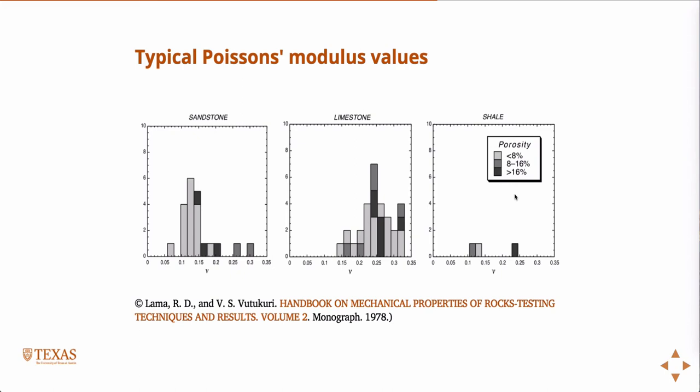Unconfined compressive strength tests are ubiquitously the most common experiments done on geomaterials. A lot of times this is the only test that will be done, and therefore it will be given to you as if — here's the UCS, here's the unconfined compressive strength — as if you should know everything about the rock based on that. But it turns out that rocks, in the situations that we use them under confinement, behave quite a bit differently than they do unconfined. The unconfined compressive strength test is probably the least useful of any possible test you could do on the rock. Nevertheless, it is the most ubiquitous — you will see it. That's why we do it in the lab; it's worth learning, but it's probably the least useful.